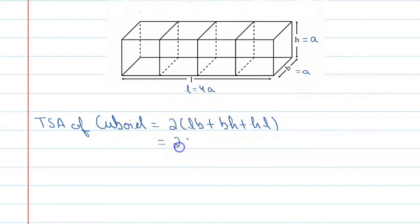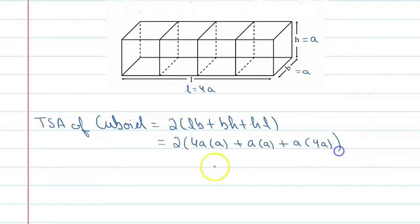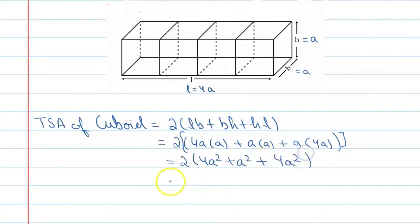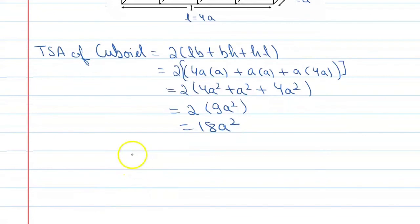Now put in these values: L = 4a, B = a, H = a. You will get 2(4a·a + a·a + 4a·a), which gives 2(4a² + a² + 4a²), which means 2 × 9a² = 18a². According to the question, 18a² = 648.